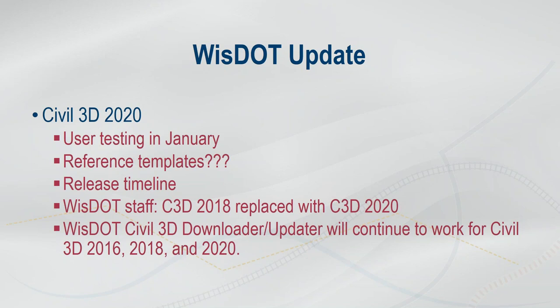For WISDOT staff, once Civil 3D 2020 is ready, we are actually going to be replacing Civil 3D 2018. If you have a Civil 3D 2018 project now, you will use Civil 3D 2020 moving forward. There's not a DWG format change, and we are not changing any of our Civil 3D plotting standards. You just open up your DWG files with 2020 and move forward — no migration process for the DWG files. It's sort of synonymous with a Word update.